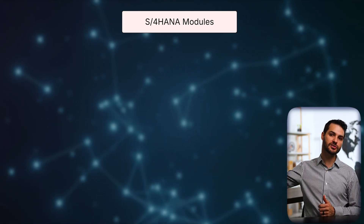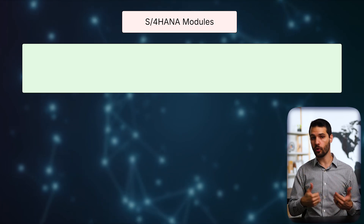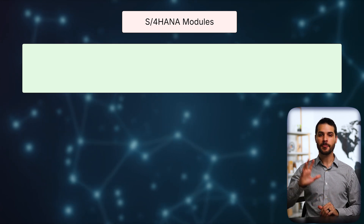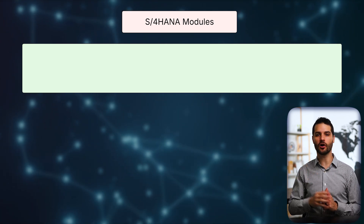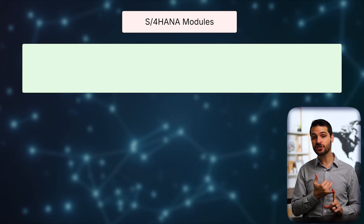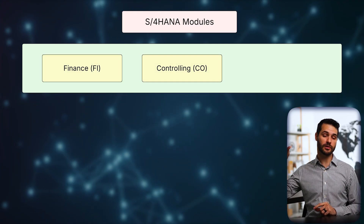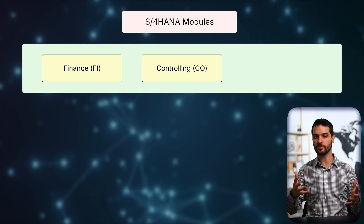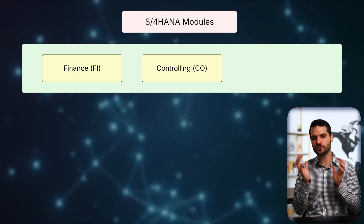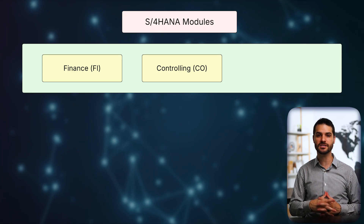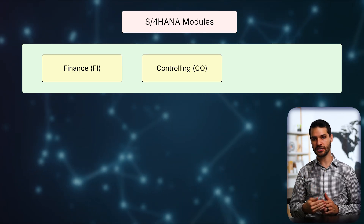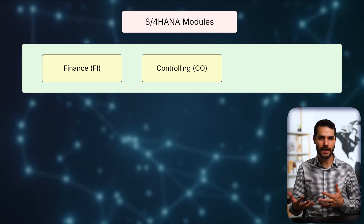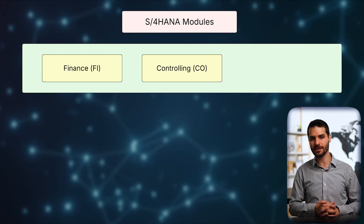Starting with the first tier, which I'd describe as the core modules — and again, this is my opinion, not official canon from SAP. When you look at core modules, it's hard to argue against including the Financial Accounting module and the Controlling module. Those are generally referred to as FI and CO, and often thought of together — people just refer to them as FICO. You might hear people say 'I'm a FICO consultant.' There's so much overlap and integration between those two modules that they're essentially combined, and they're so predominantly used that if you're not using them, you'd have to question why you'd go with S4 HANA at all.